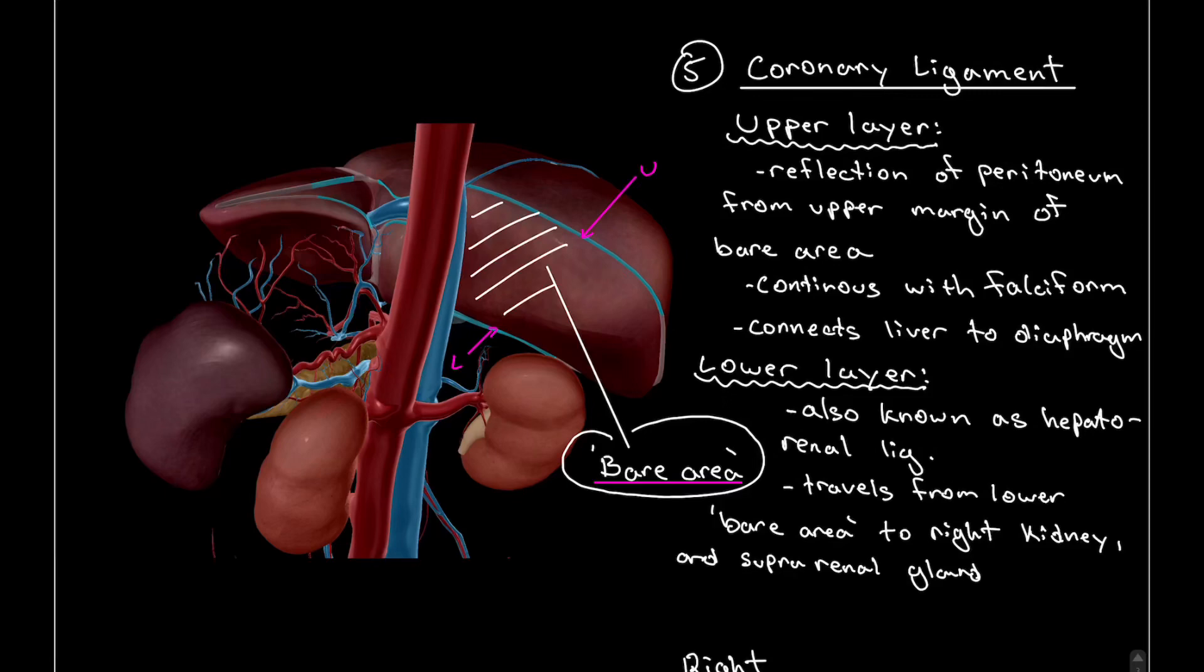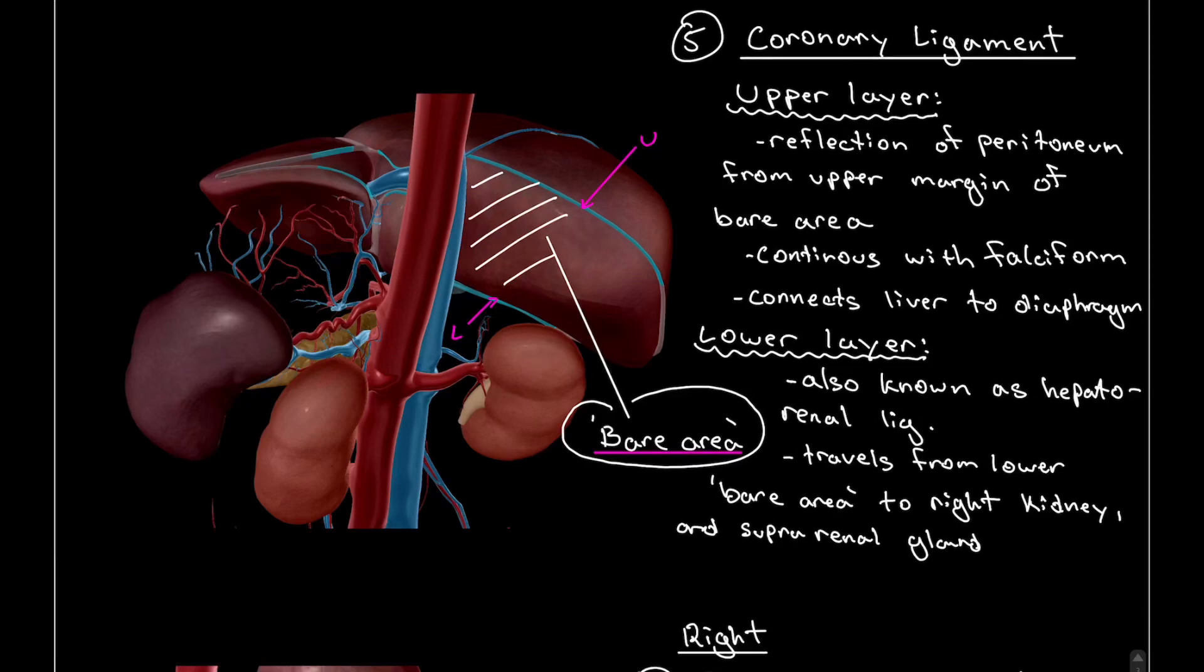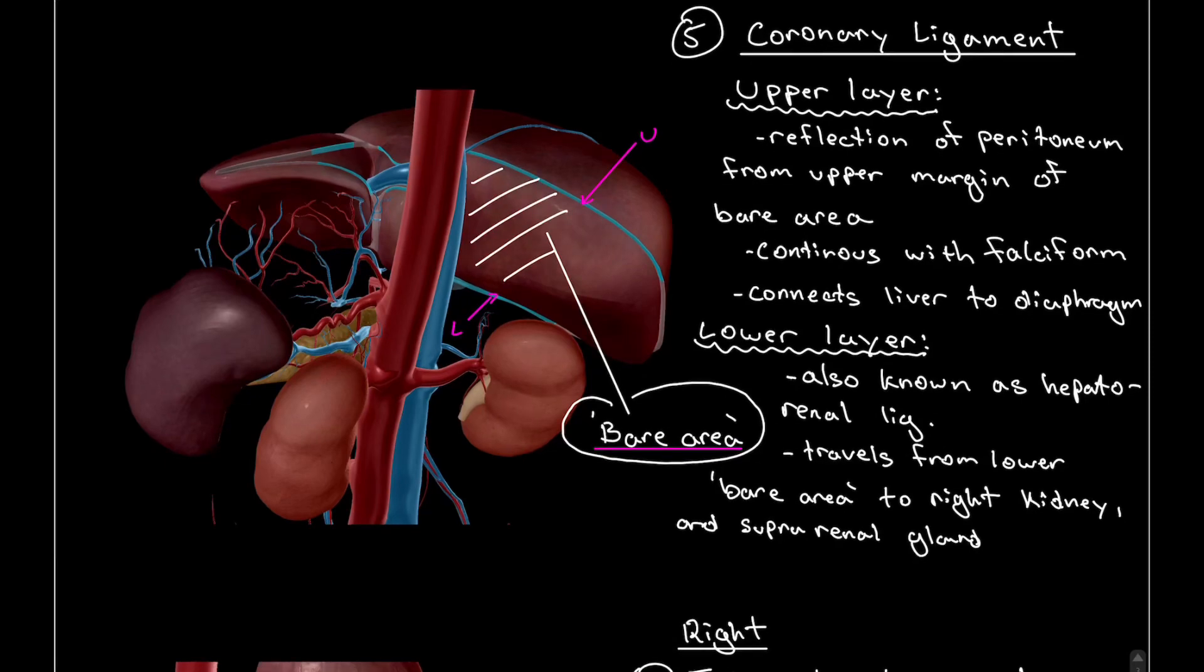Again, it continues the falciform ligament, which we initially talked about—that ligament on the anterior surface—and it connects the liver directly to the diaphragm. The lower layer is also known as the hepatorenal ligament, which gives fibers going directly to the right kidney and the right suprarenal gland, providing structural support to both the kidney and the right lobe of the liver.